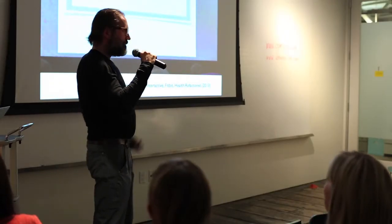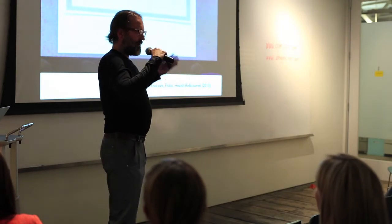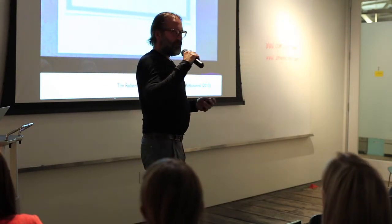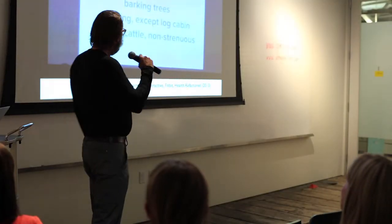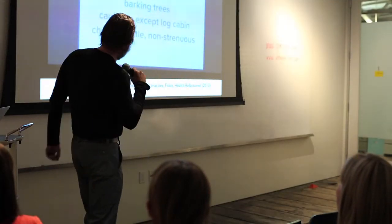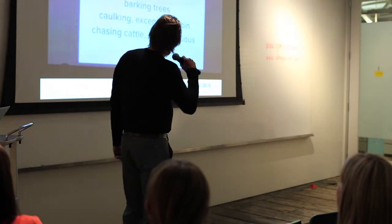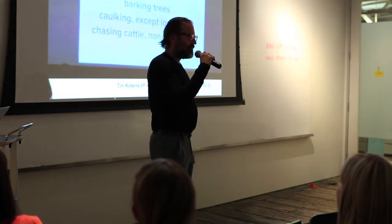When Fitbit set up their taxonomies for things that people would do, they realized that a lot of times people wouldn't have the activity tracking device on them. So they made a series of categories available that people could manually log. They assumed people would log things like walking, running, swimming, and bicycling — because that's why they bought their Fitbit. What they ended up logging were activities like: changing a light bulb, showering, drilling coal, barking trees.